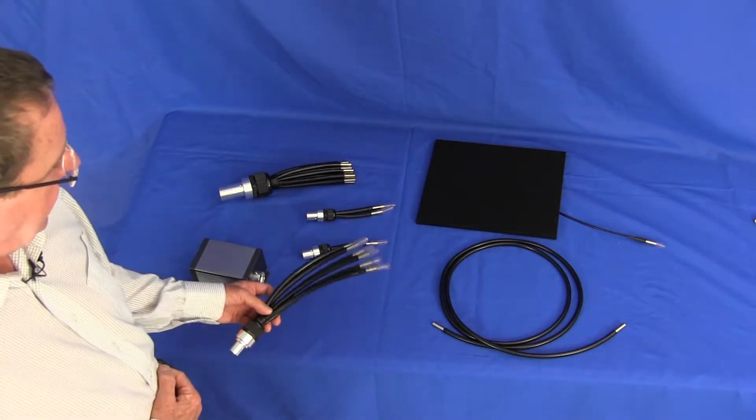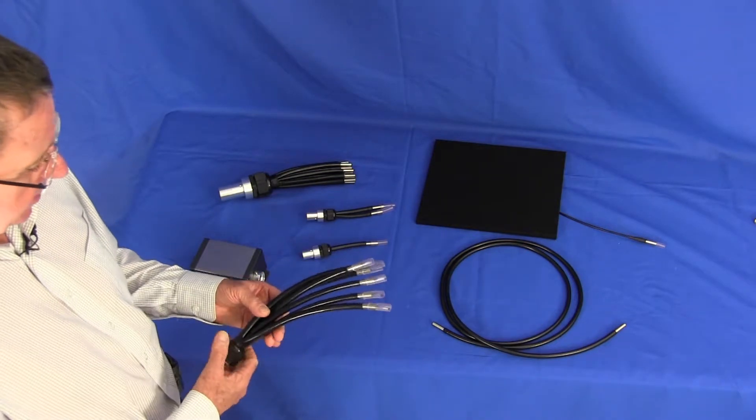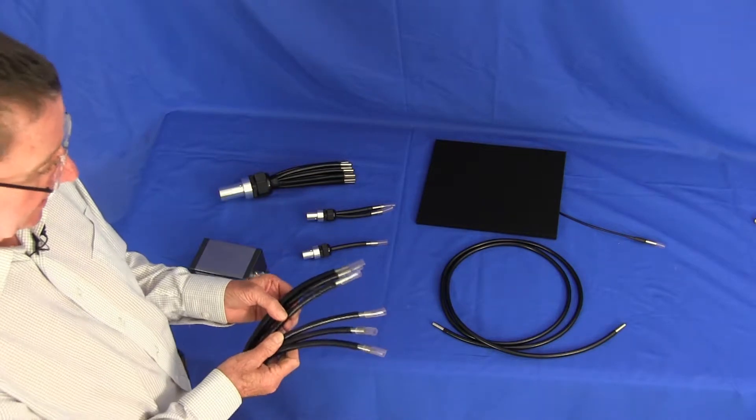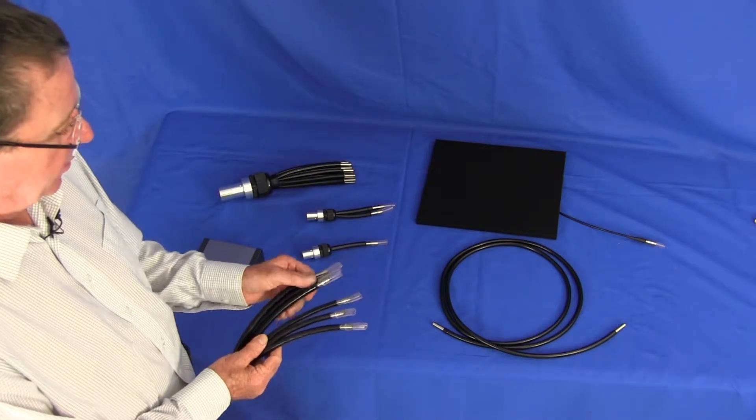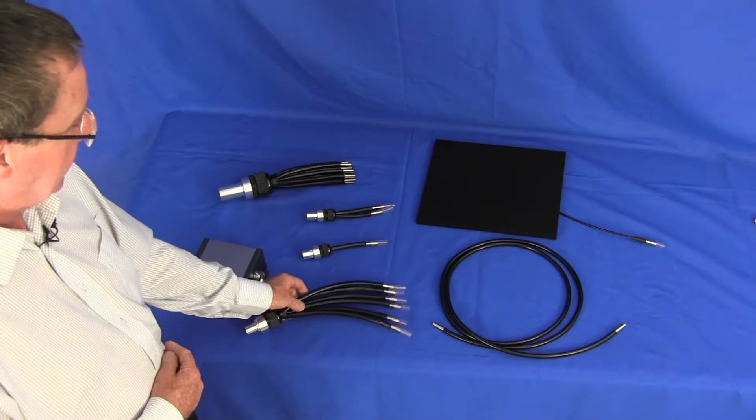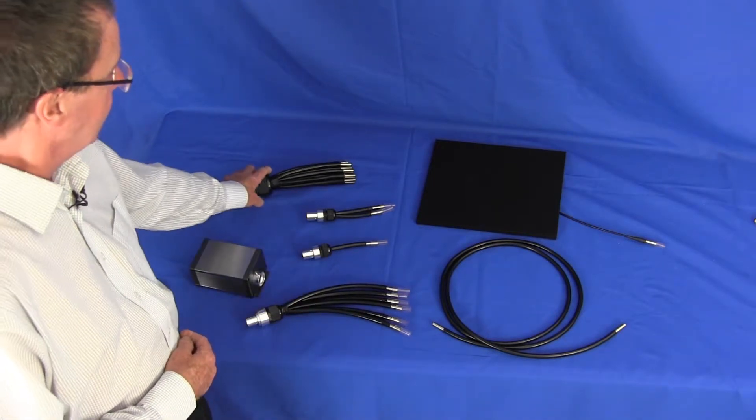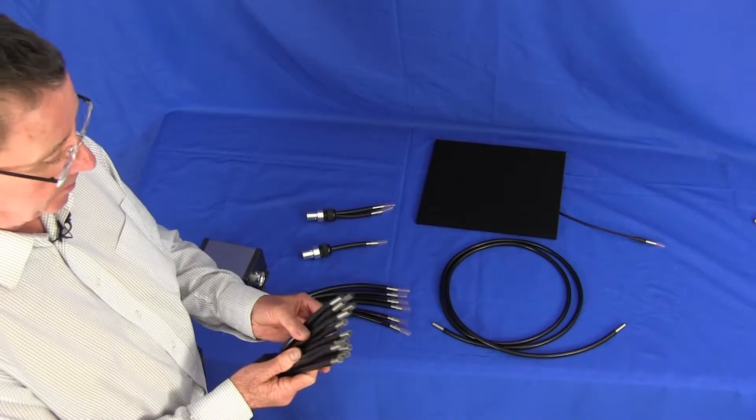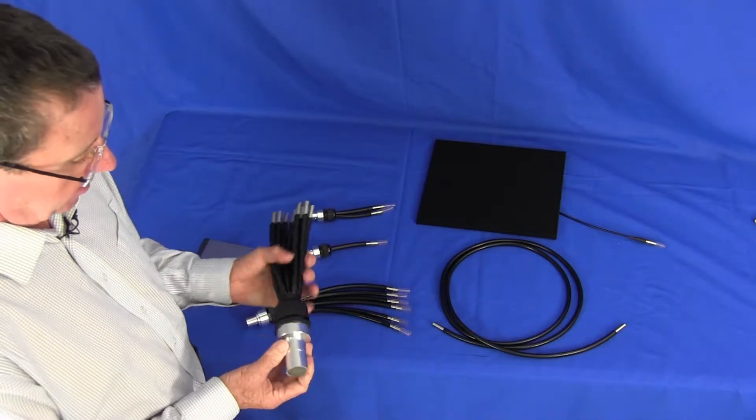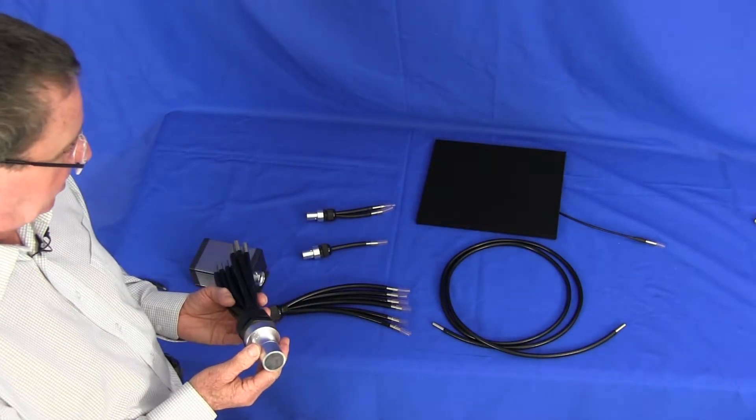This is a Hydra common end splitter, so this splits the light into, in this case, six outputs with optical joints. We make this in various guises: single, double. This one has 12 outputs and this ferrule is for our maxiseries light source.